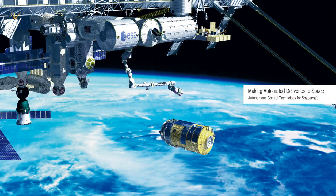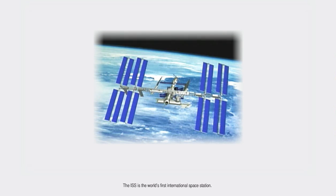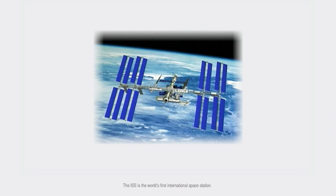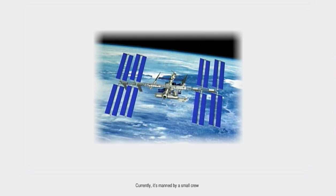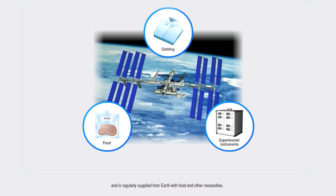Making automated deliveries to space. The ISS is the world's first international space station. Currently, it's manned by a small crew and is regularly supplied from Earth with food and other necessities.